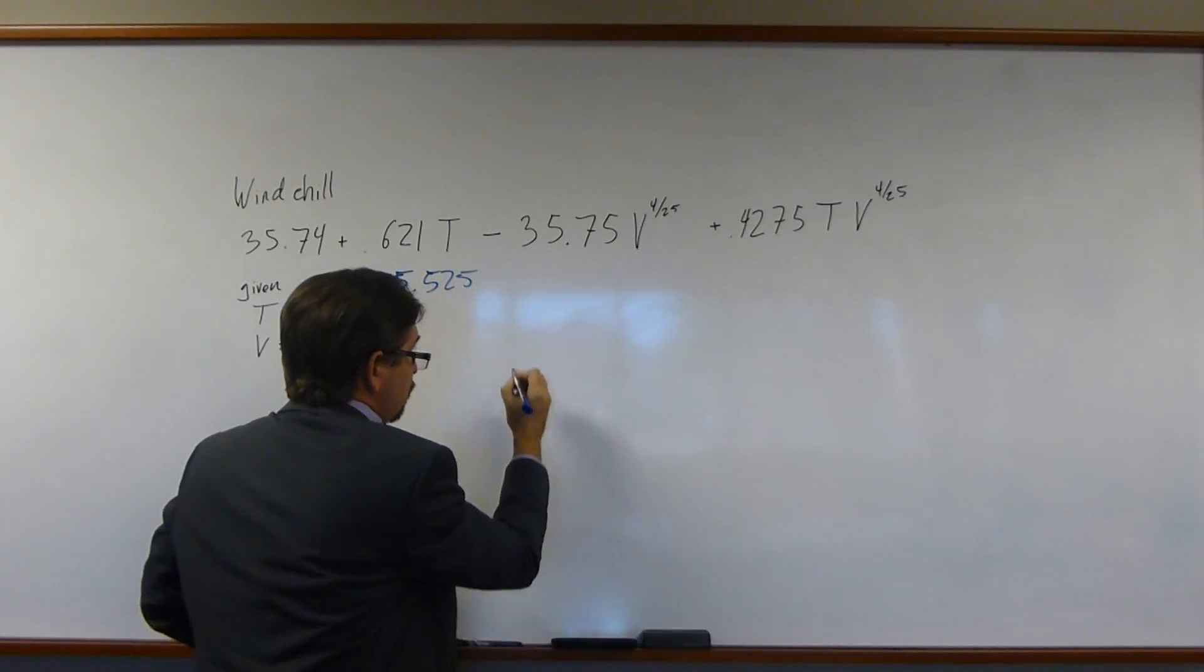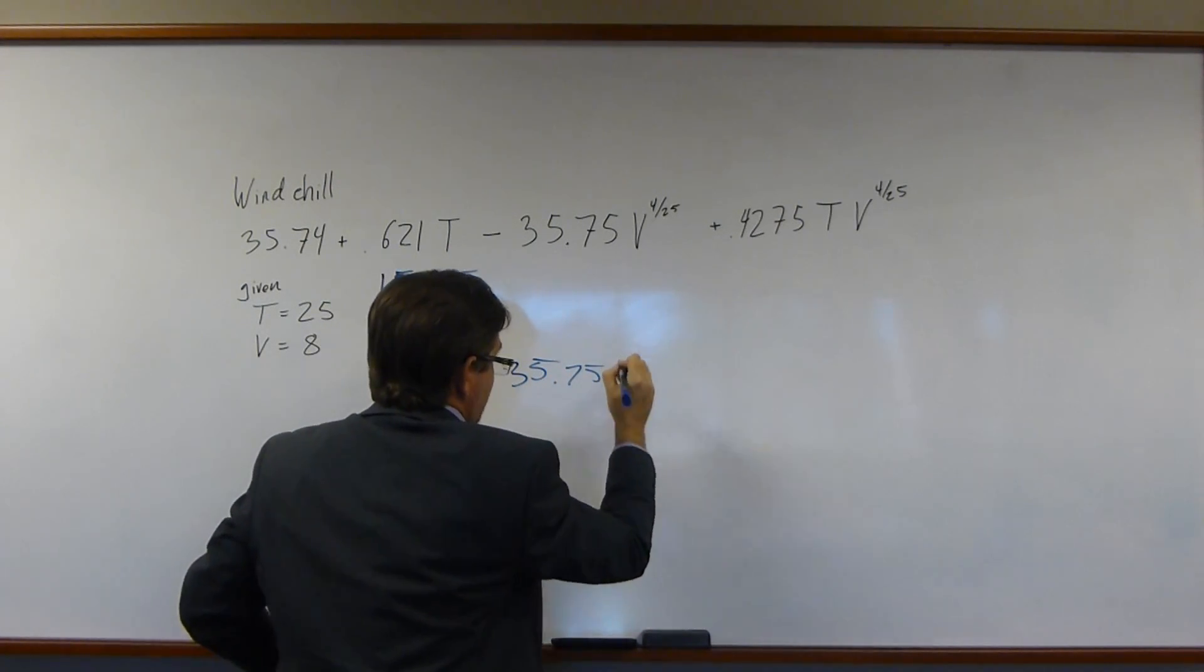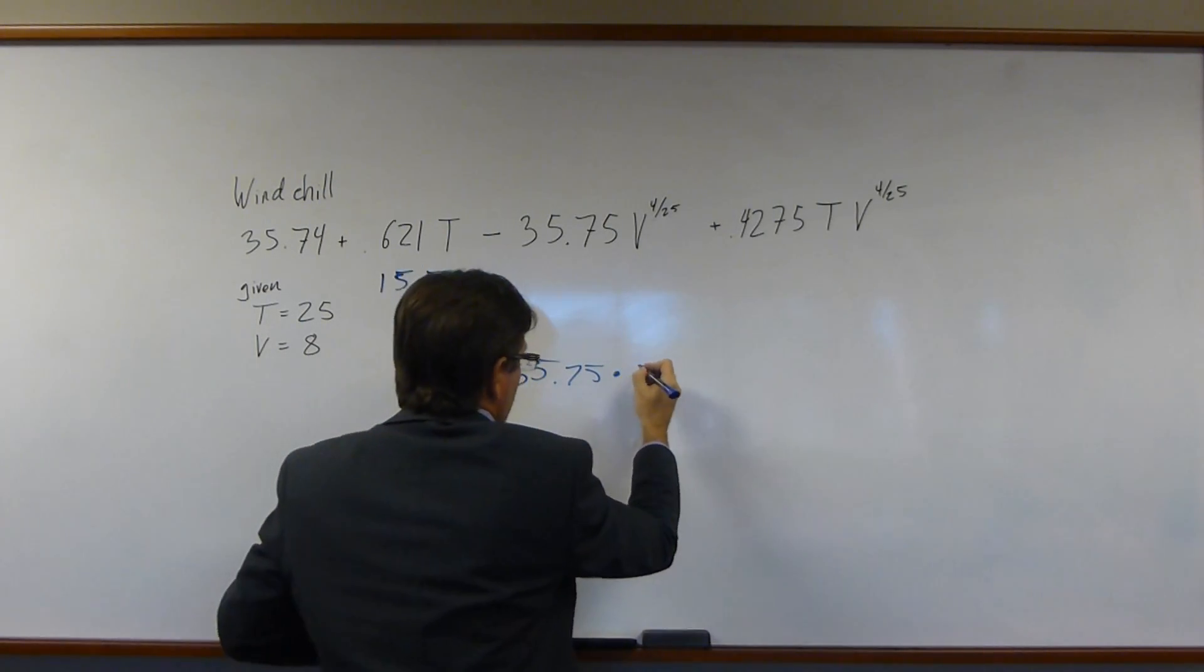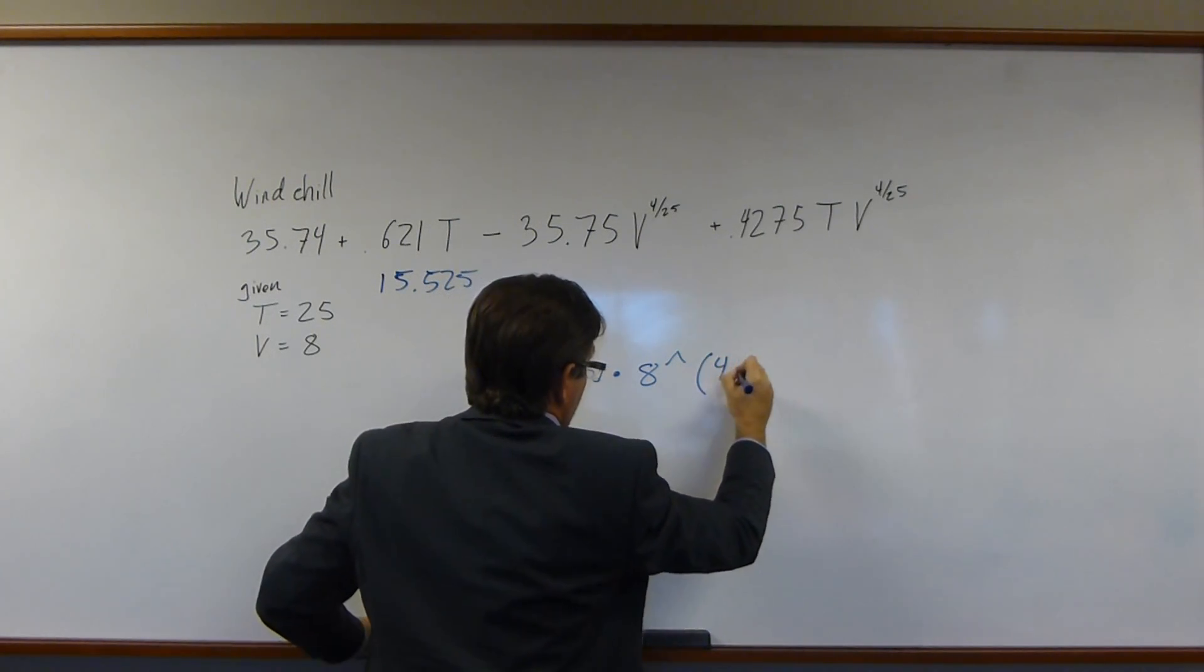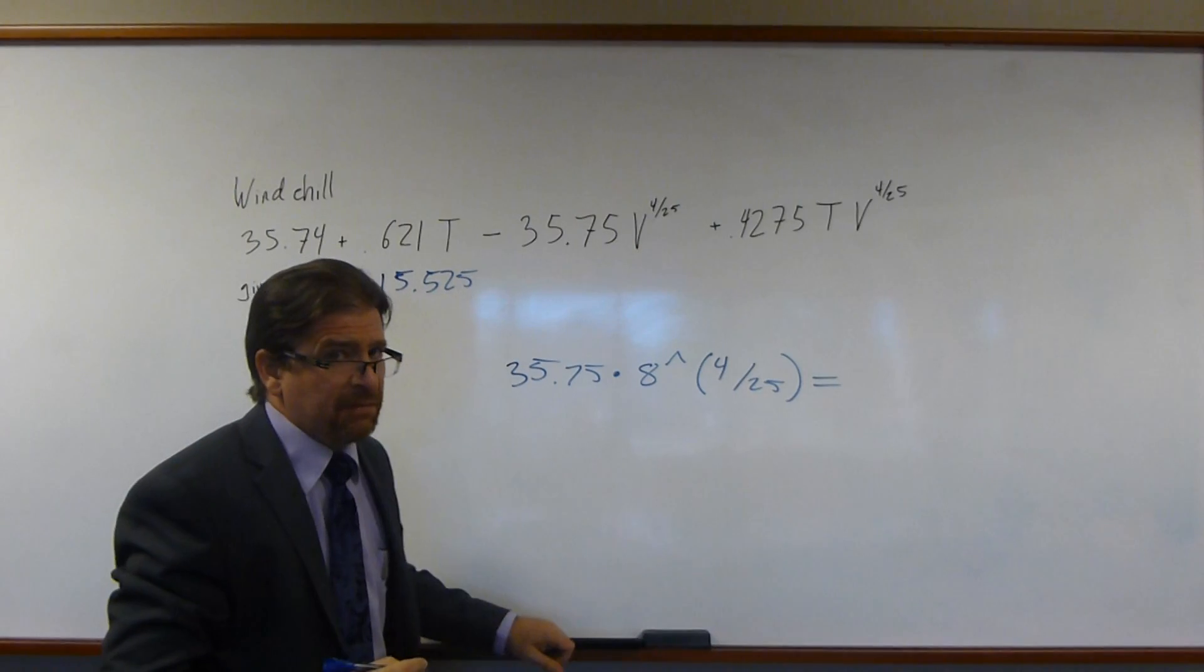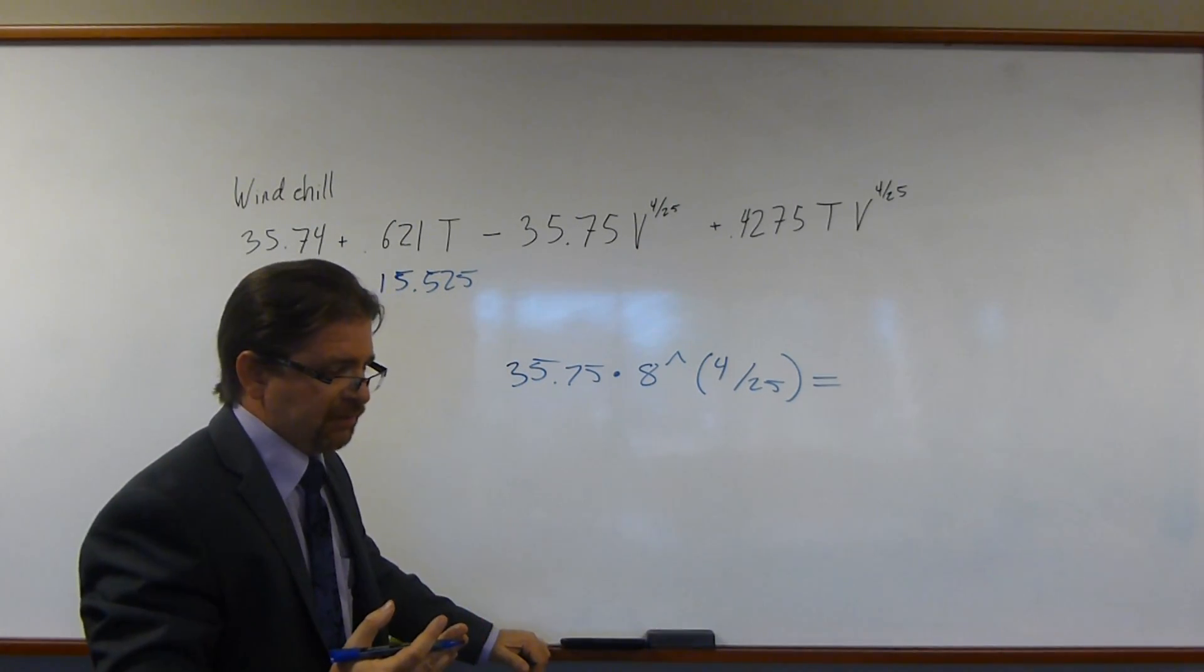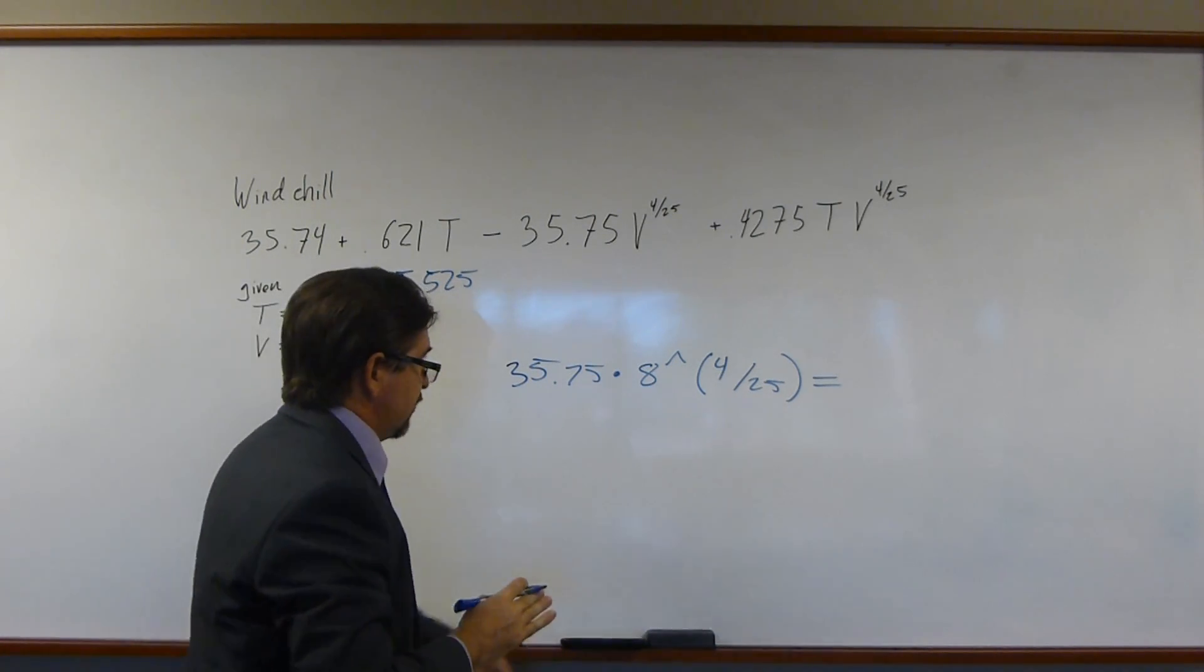Something like this, I would type into Google 35.75 times, a little asterisk. V is 8, so I have 8 to the power of parentheses 4 slash 25 close parentheses equals. Type that in and it will do the calculation for you. Very handy. Some people don't prefer this. There's other online calculators you can use that are also great. That's certainly an option.